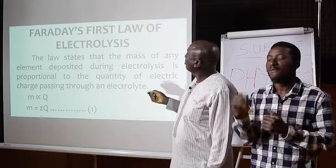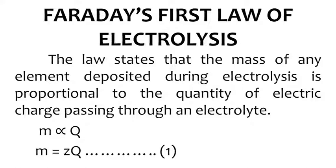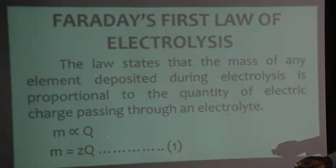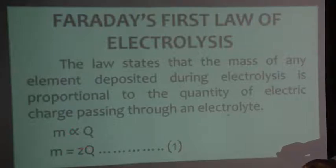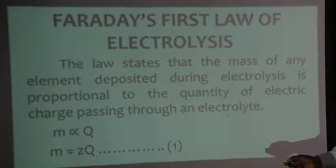Faraday's first law of electrolysis. The law states that the mass of any element deposited during electrolysis is proportional to the quantity of electric charge passing through an electrolyte. So mathematically, we have small letter m directly proportional to capital letter Q. Now, if we remove the sign of proportionality, we introduce a constant. Therefore, we have small m to be equal to small z times capital Q. And we call it equation 1.